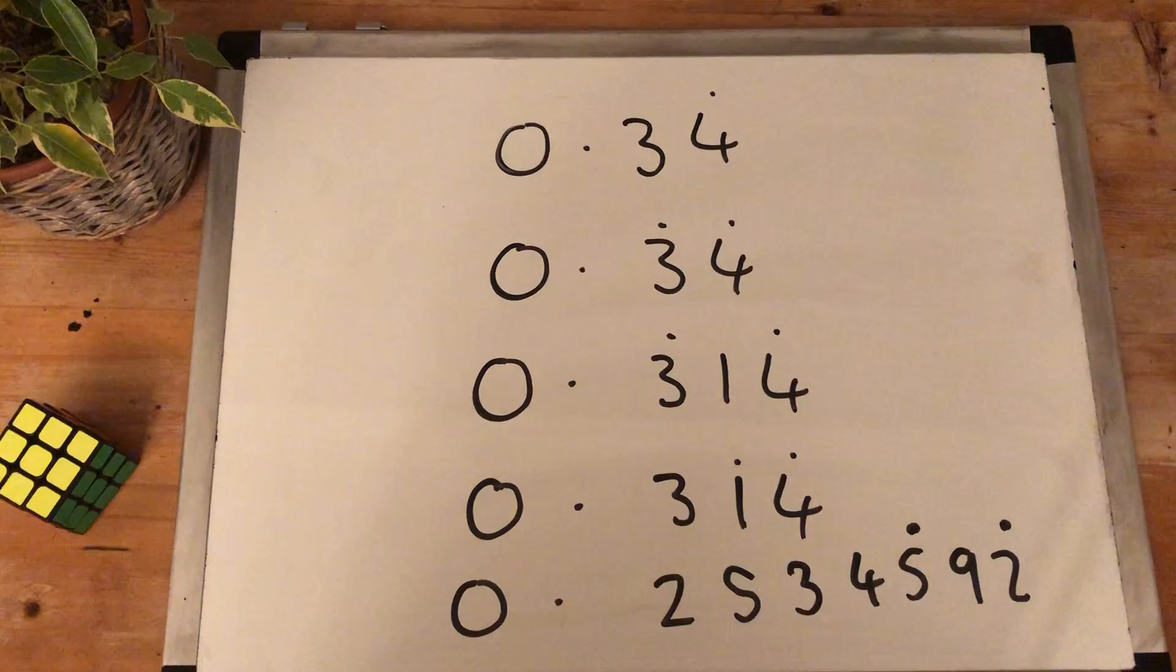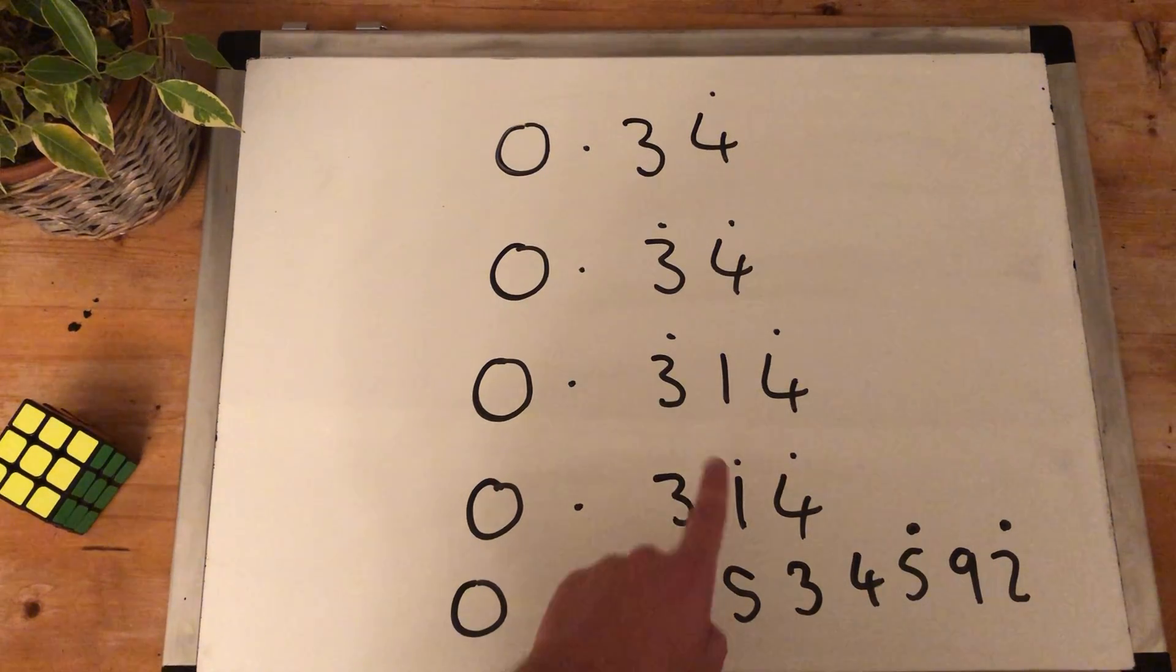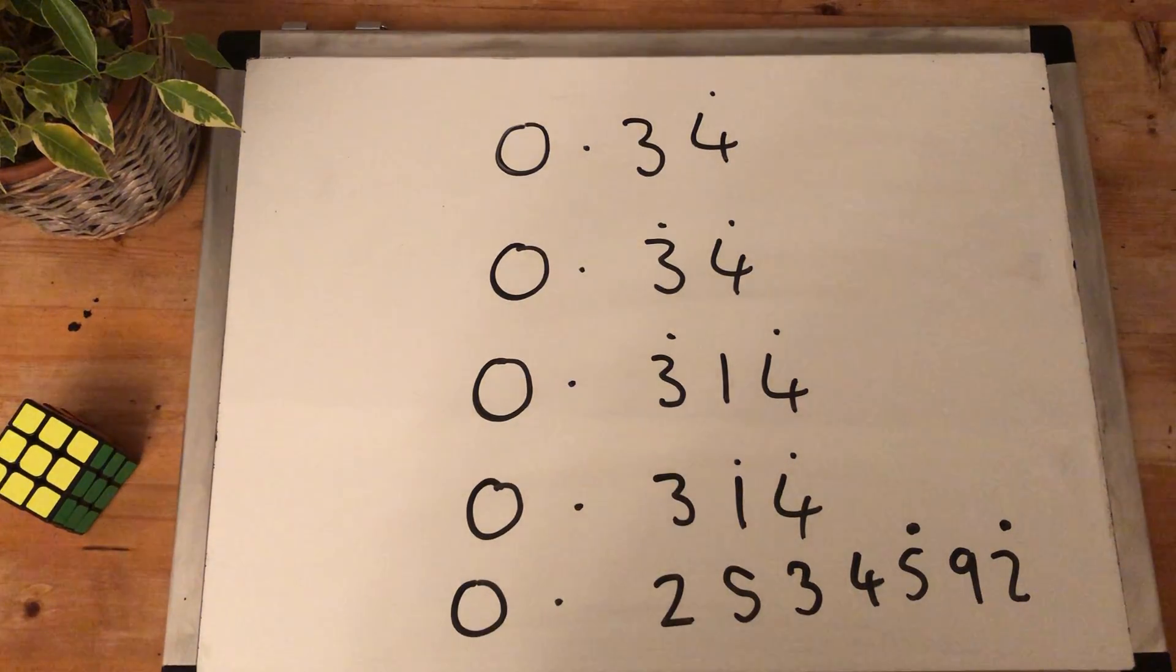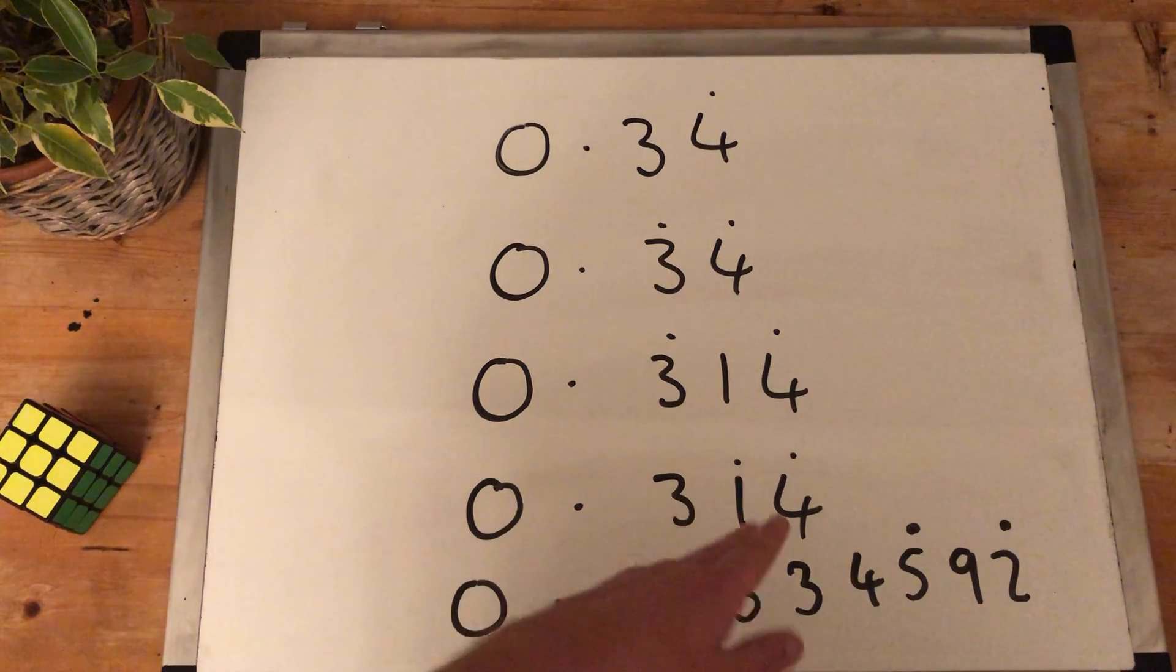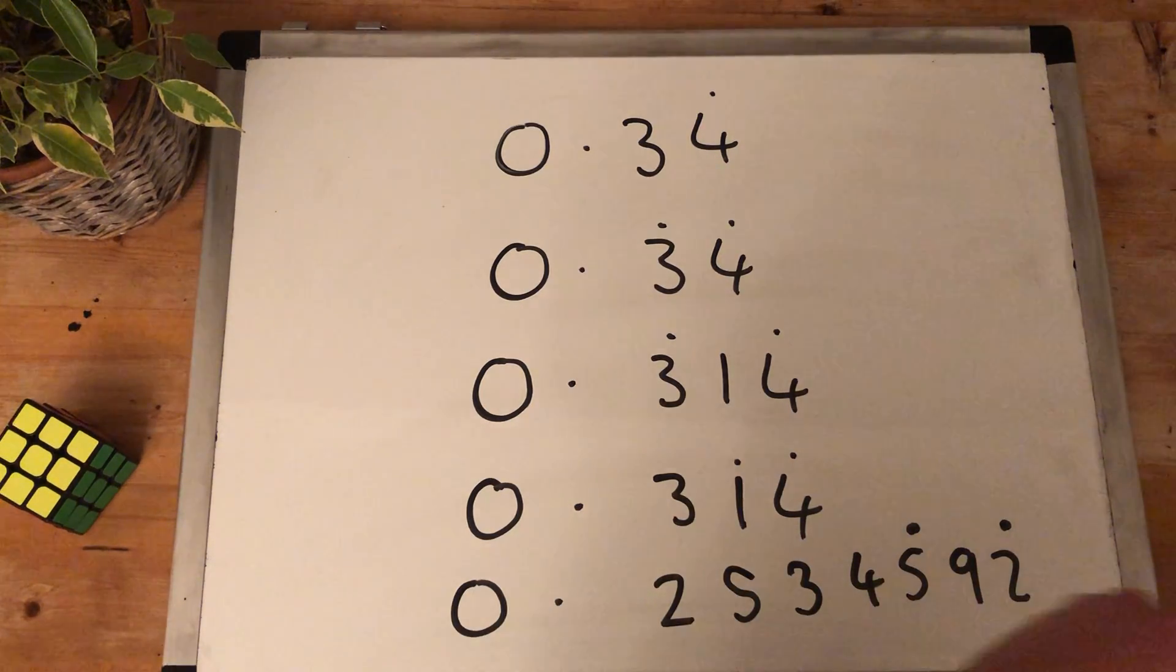0.314, well here is the 3 recurring. No, there's no recurring symbol above the 3. So it's just 0.3141414141414 forever.